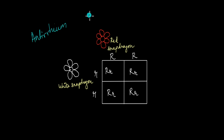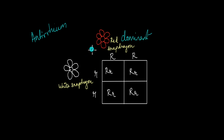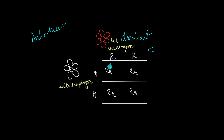When he was working with this flower, he crossed a red snapdragon with a white snapdragon. Now we have to remember that the red color is dominant over the white flower color. So if this flower were to follow Mendel's laws of inheritance properly, then crossing a homozygous dominant red flower plant with a homozygous recessive white plant, you would expect the F1 generation to all be heterozygous with a red phenotype.